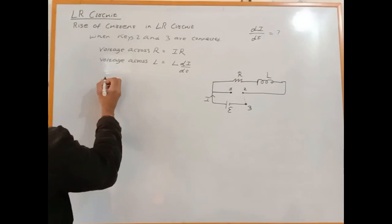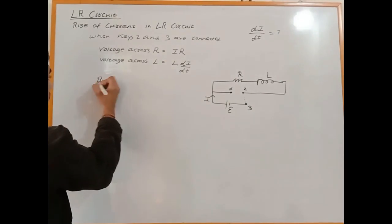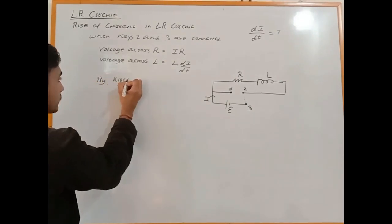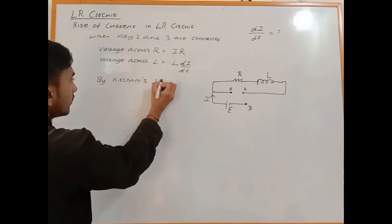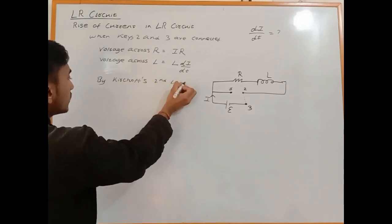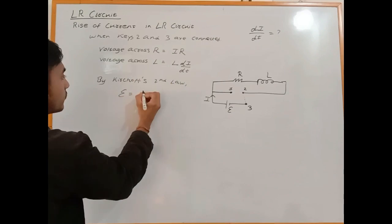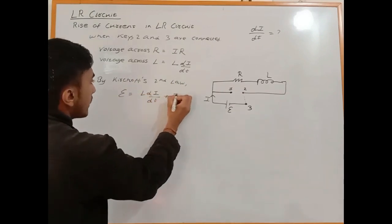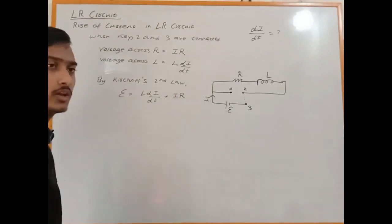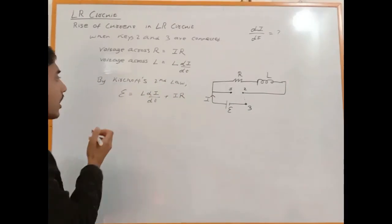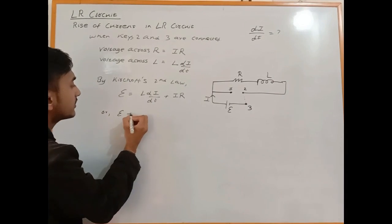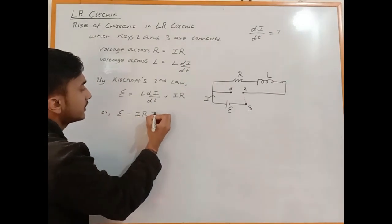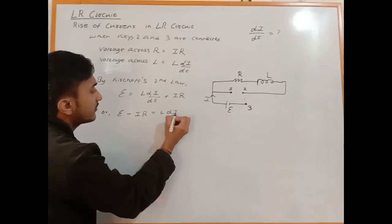By applying Kirchhoff's second law, the total voltage E equals L dI/dt plus IR. So E equals L dI/dt plus IR.